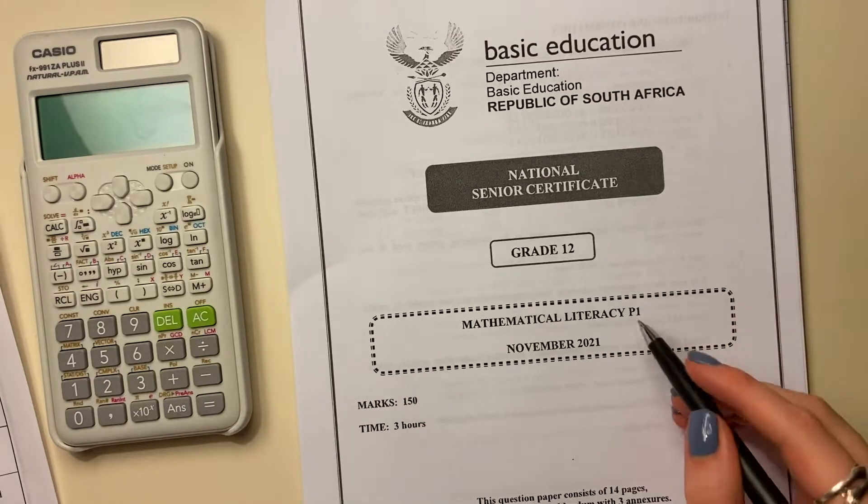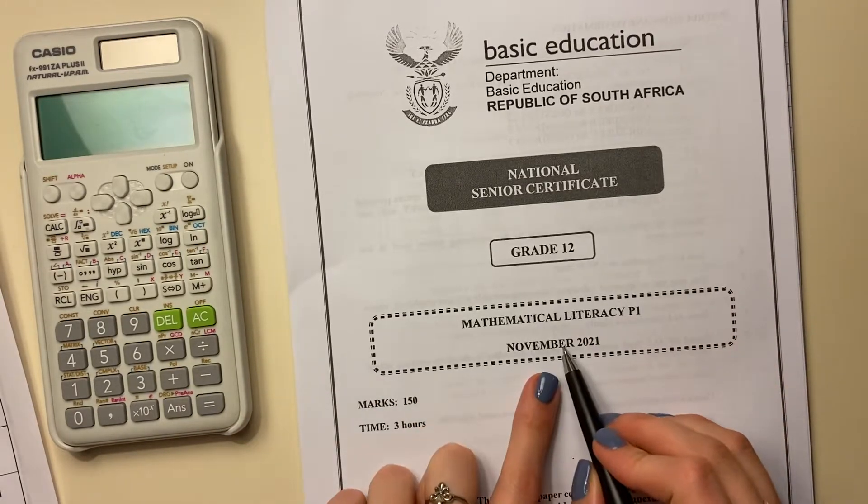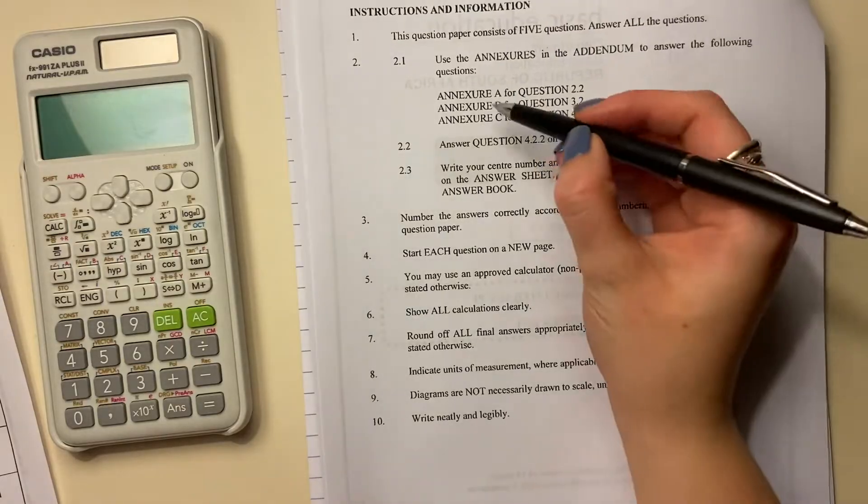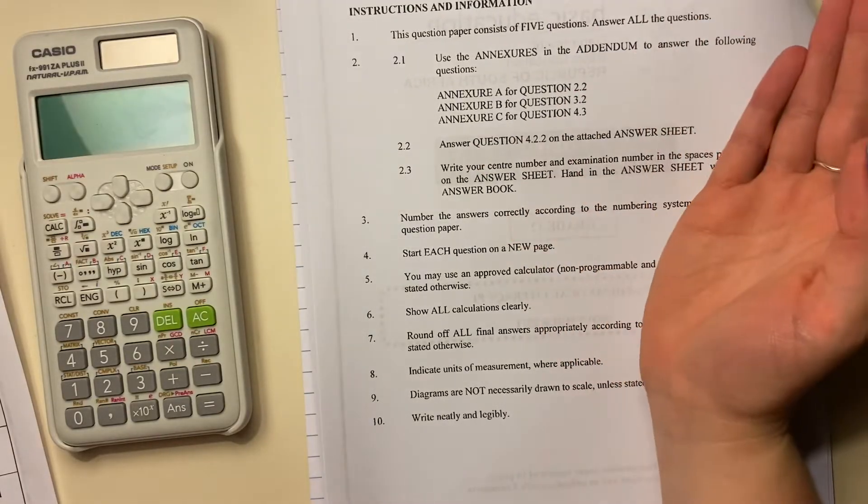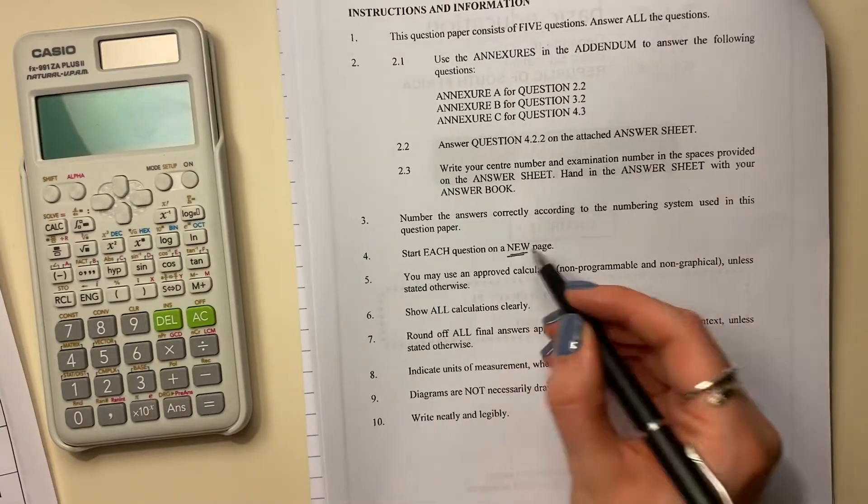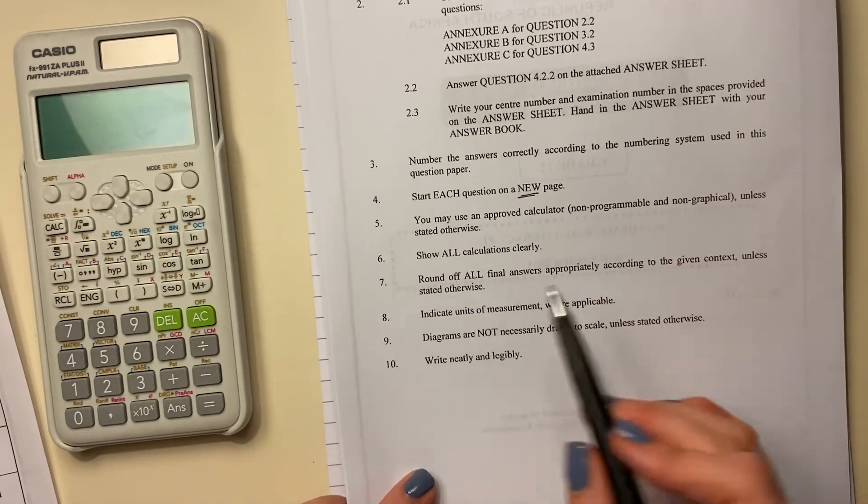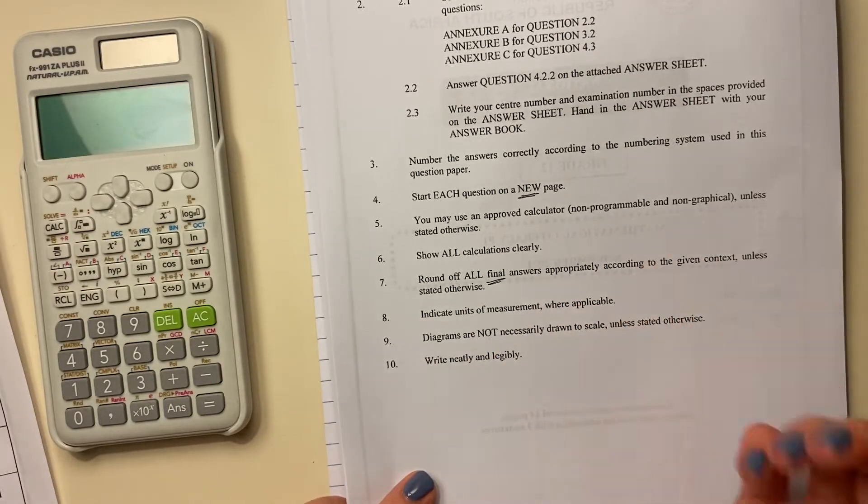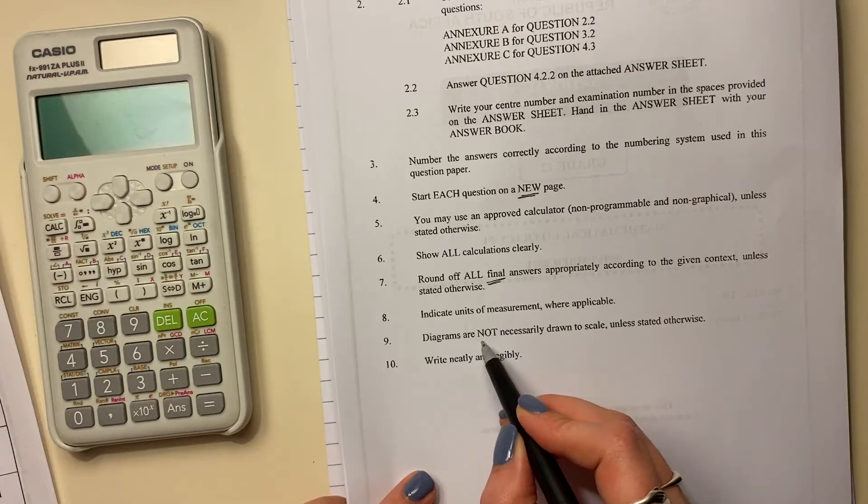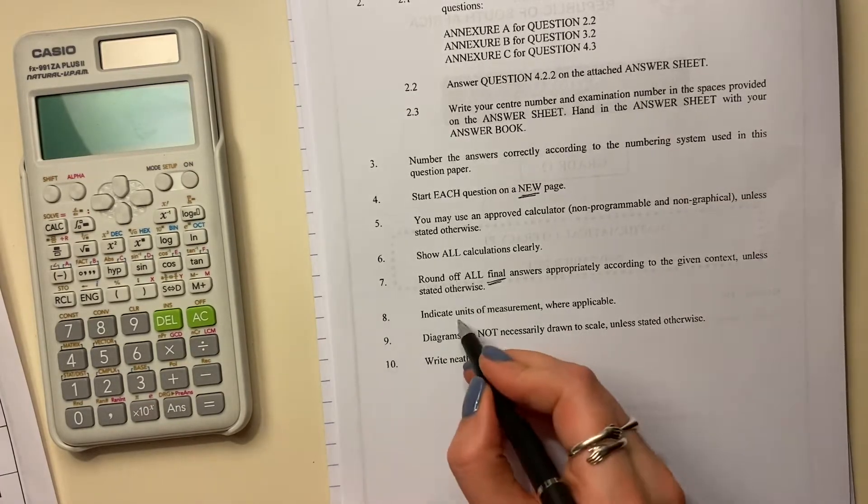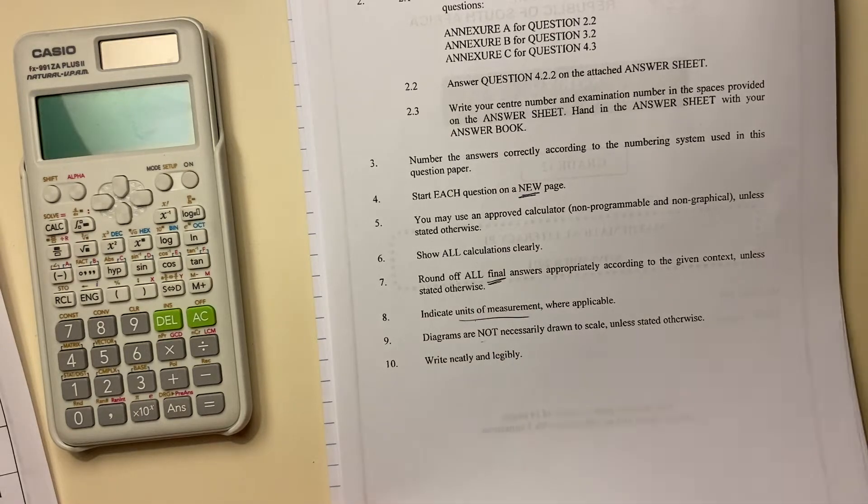Alright, we're going to start Paper 1, Math Lit of November 2021. Let's jump in. As always, read your instructions. Please make sure that you have your annexures because you're going to struggle to do those questions if you don't. Each question needs to start on a new page. Just note that from a formatting perspective. Then it says round off all final answers. Don't round off while you're working. And then not all diagrams are necessarily drawn to scale. That's quite important. And obviously always show your units of measurement, but that goes without saying.